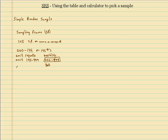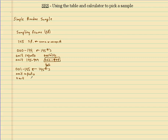Another method is to number from 001 to 145. This makes more sense to people since you don't start at 000. There are still 145 numbers. You have to omit repeats — you can't choose a person twice. And you have to omit numbers that people don't have, meaning those no one in the sampling frame is assigned.